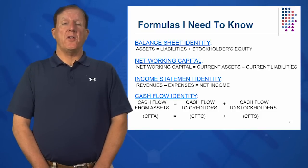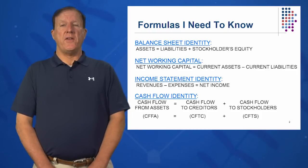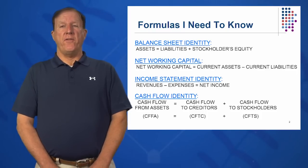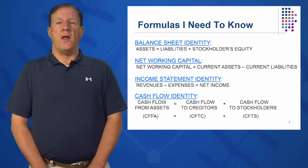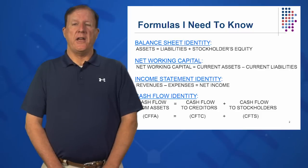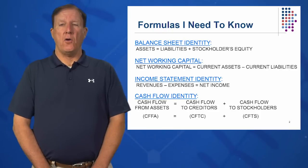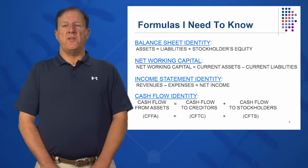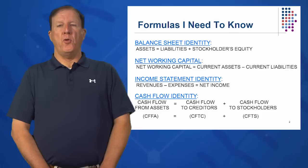Perhaps the most important identity is the cash flow identity: cash flow from assets equals cash flow to creditors plus cash flow to stockholders. Especially in the small business where each and every Friday you need to pay your employees, you have to have positive cash flow and cash available. This looks a lot like the balance sheet — just put 'cash flow from' in front of the balance sheet. Abbreviated: CFFA equals CFTC plus CFTS.